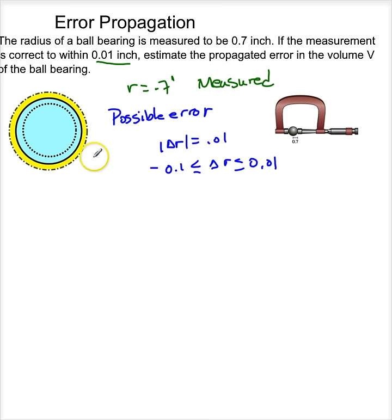Let me come over. I know that the volume of my ball bearing, well, it's a circle. It's a sphere. So the volume is 4 thirds pi r cubed.